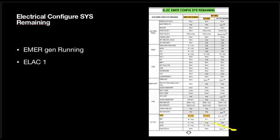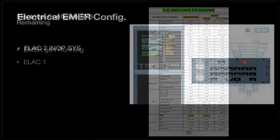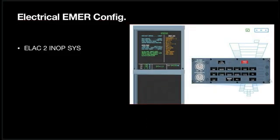Electrical configuration — system remaining. Emergency generator running. ELAC 1. Electrical emergency configuration: ELAC 2 and ops system.